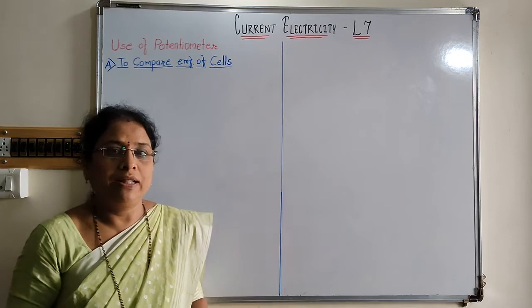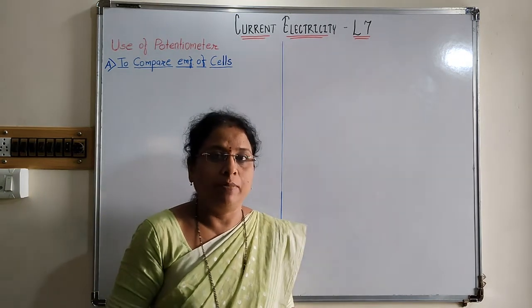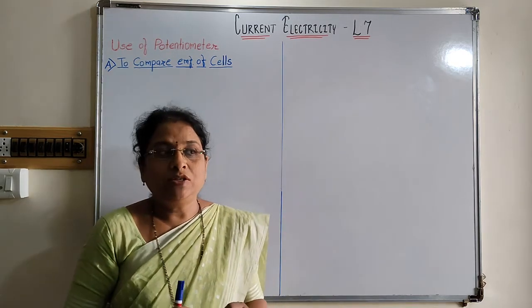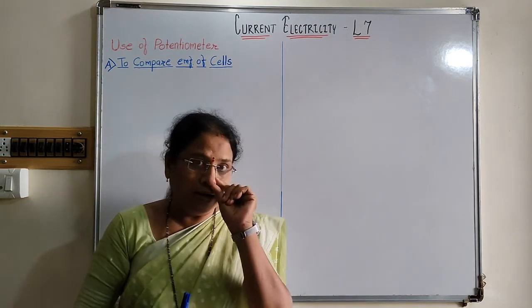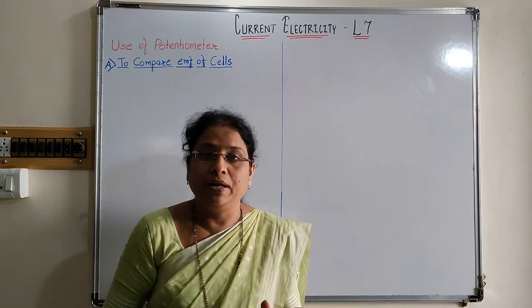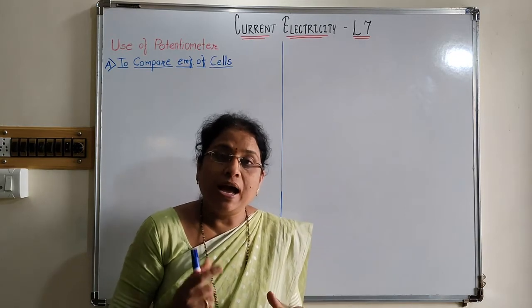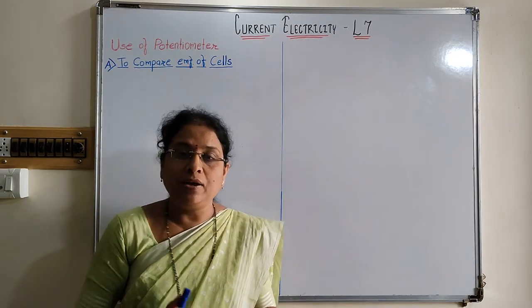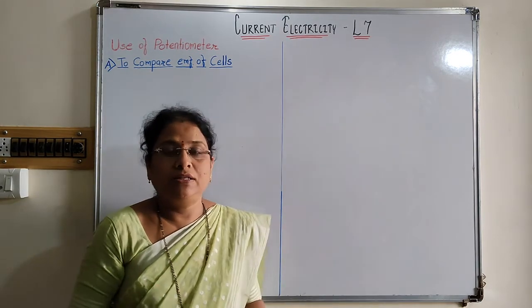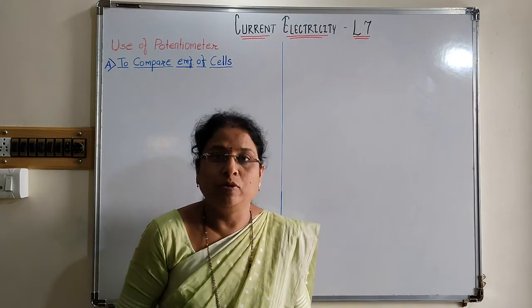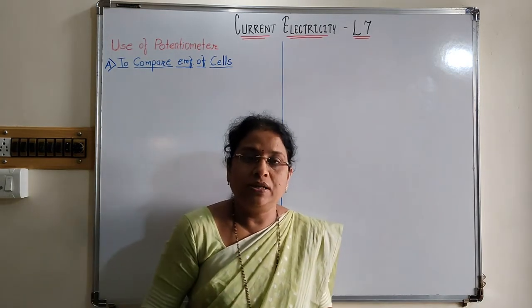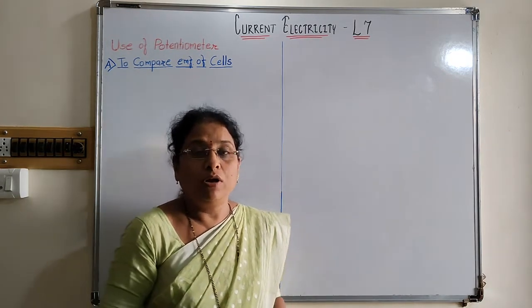We know what a potentiometer is. In the last video, you learned that a potentiometer is a device used to measure the EMF of a cell. The potentiometer works as an ideal voltmeter — and you know that the ideal voltmeter has infinite resistance. We can increase the resistance of the potentiometer more than that of the voltmeter, so the potentiometer can measure the smallest EMF, smallest voltage, better than the voltmeter.